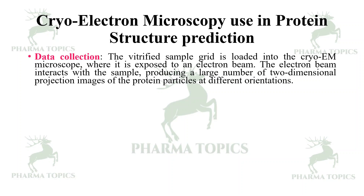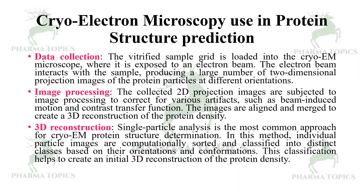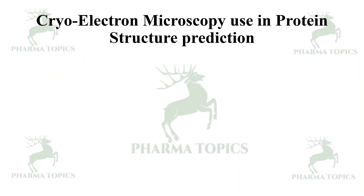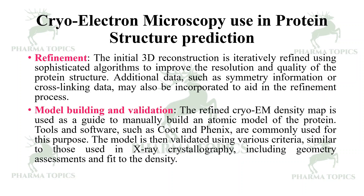Data must first be collected after sample preparation. The collected 2D projections are subjected to image processing and 3D reconstruction. In 3D reconstruction, individual particle images are computationally sorted, classified, and protein density is reconstructed. Refinement then uses sophisticated techniques such as cross-linking data and symmetry information to improve resolution and quality. Model building and validation are performed using software like Coot and Phenix.